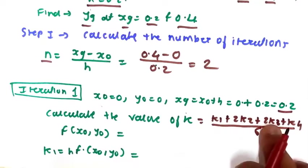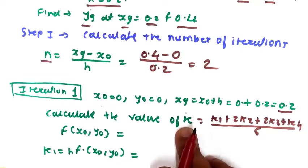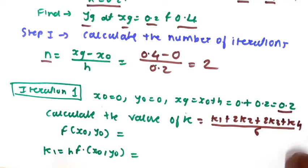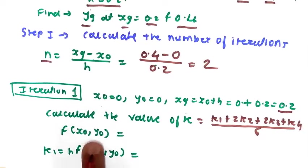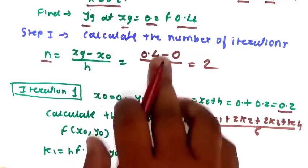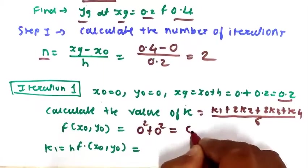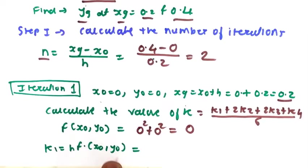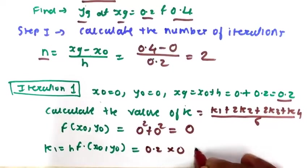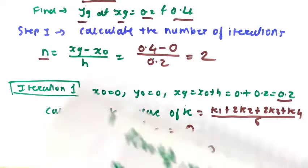To find k, we first find k1, k2, k3 and k4 step by step. First, find f(x0, y0): substituting x0 = 0 and y0 = 0 into x² + y², we get 0² + 0² = 0. The formula for k1 is h × f(x0, y0), so k1 = 0.2 × 0 = 0.